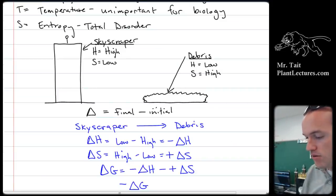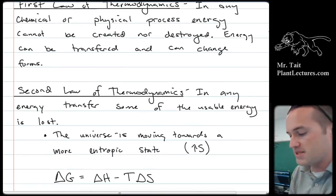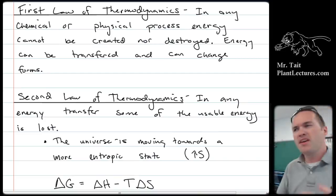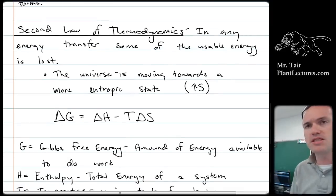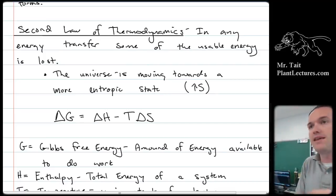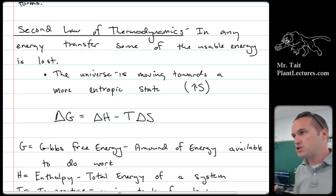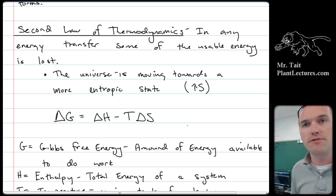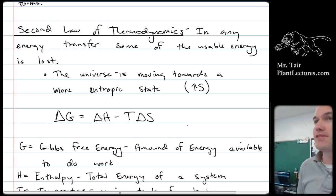Thermodynamics stuff. The laws of thermodynamics are important. The first law says that in any chemical or physical process, you cannot create or destroy energy. The second law says that anytime you transfer energy, some of the usable energy gets lost as heat, which means that in ecology, energy can't cycle through an ecosystem — energy has to flow through it because every time energy is transferred, some of the usable energy is lost as heat. The Gibbs free energy equation is on the formula sheet, so if you get asked a question about it, flip back to the formula sheet.